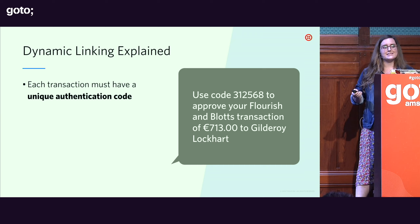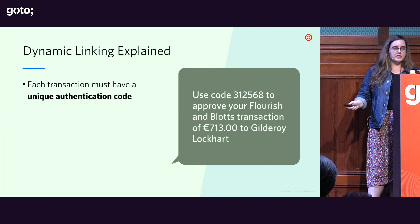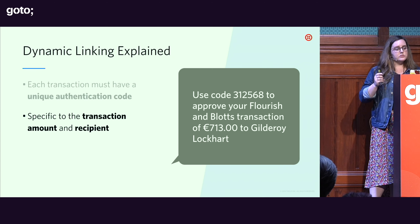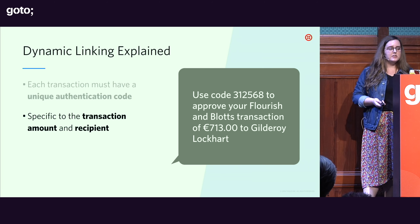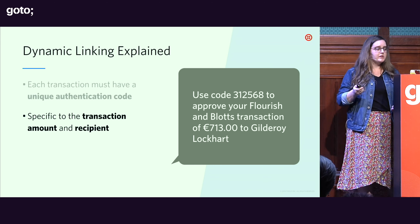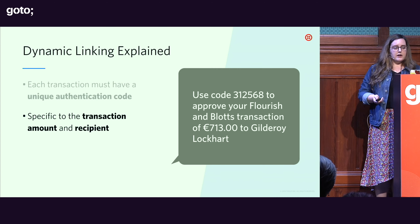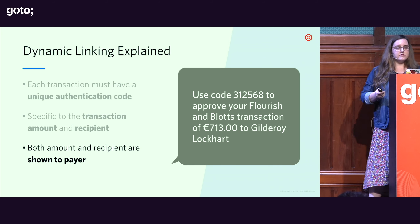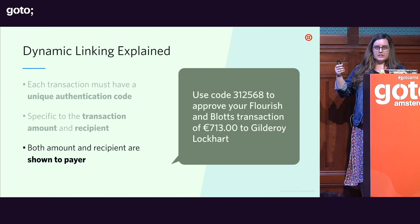That code doesn't have to be derived from information about the payment, but it does have to be a unique identifier. It has to be specific to the transaction amount and the recipient, so the message must contain that information — you can see in the example it includes both who you're sending money to and the amount. Finally, both the amount and the recipient must be shown to the payer, telling them exactly what's happening in that transaction.